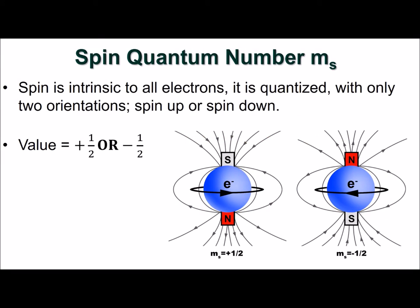These quantum numbers are the set of parameters required to completely describe an orbital. However, we need one more quantum number to completely describe an electron. The spin quantum number, m sub S, relates to the spin of an electron.